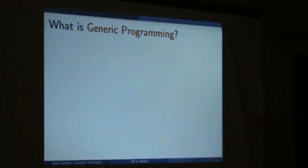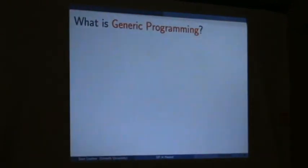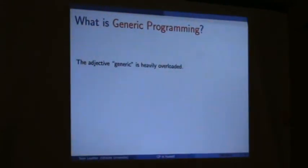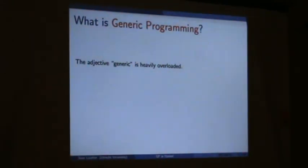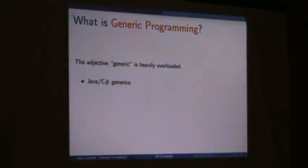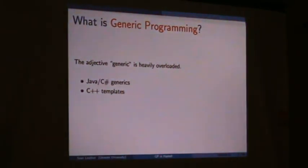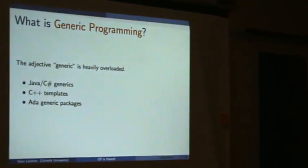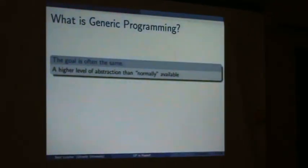First, just to widen the circle of what we're talking about: what is generic programming? You all probably have different definitions depending on your background. 'Generic' is a heavily overloaded word. You know Java, C#, and C++ templates — all different forms of generics. Ada has its own generics, which is yet another meaning. So what is it?